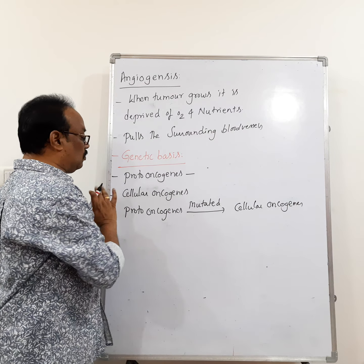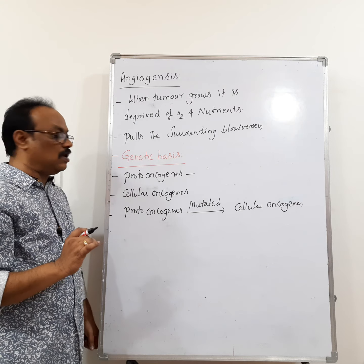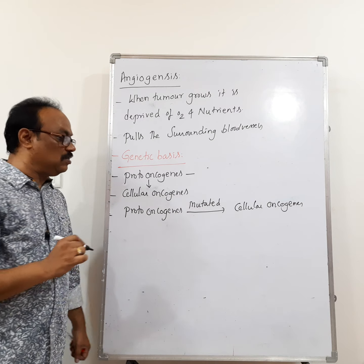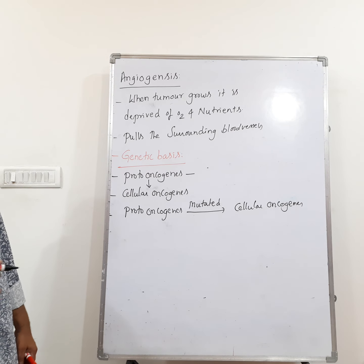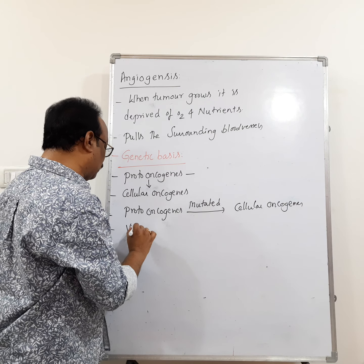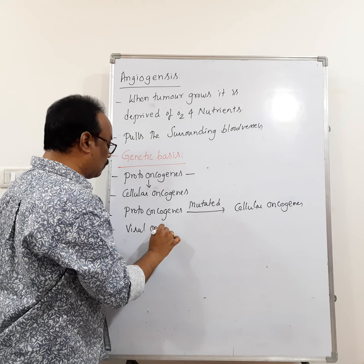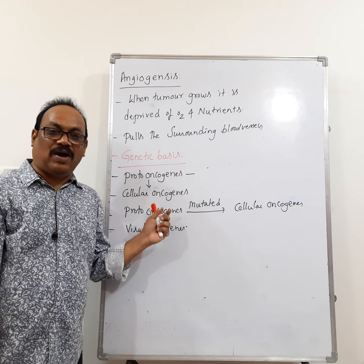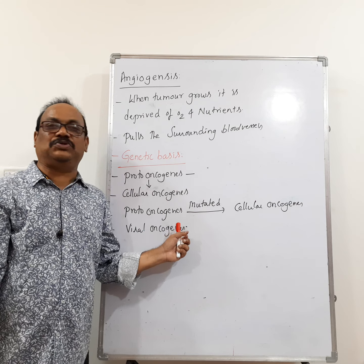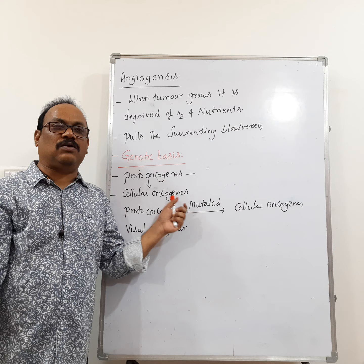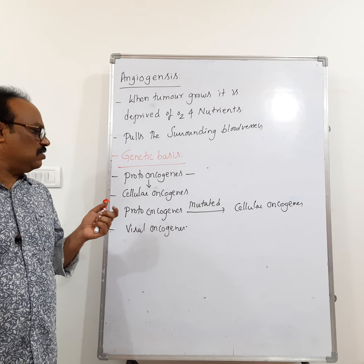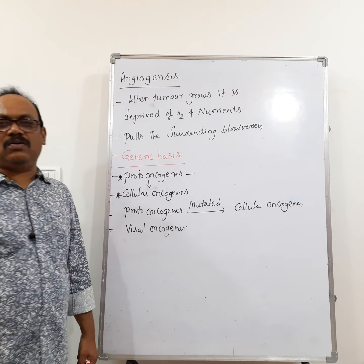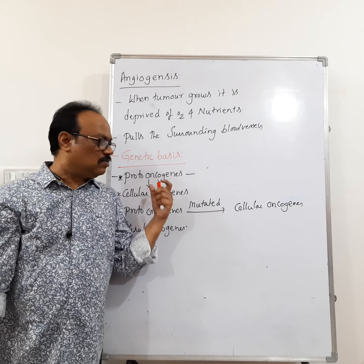Proto-oncogenes, when mutated, develop into cellular oncogenes — the tumor-forming genes. There are also viral oncogenes: viruses that can cause tumors. Remember proto-oncogenes and viral oncogenes — that is the key information here.